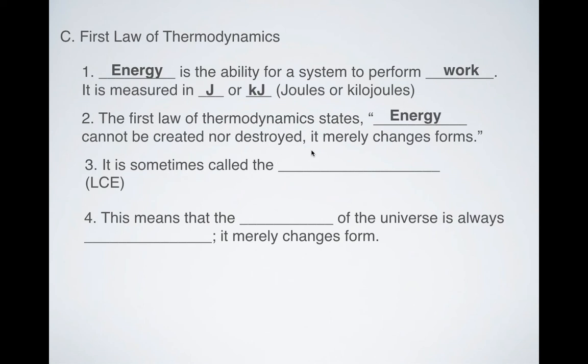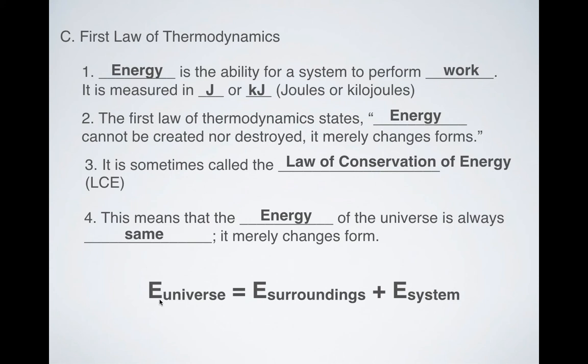What does the first law state? Energy can't be created or destroyed. It merely changes form. In other words, in order to heat something up, it requires energy, and that energy is going to be going from one location to another location. It's going to be going from the system to the surroundings or from the surroundings to the system. It's sometimes called the law of conservation of energy, and that means that the energy of the universe is always the same. If it can't be created or destroyed, there is a finite amount of energy in the universe, and all it's doing is moving from one location to another location. So you can kind of think about it like this. If we're looking at the energy of the universe, if you add up the energy of the surroundings plus the energy of your system, that always will add up to the energy that the universe has.